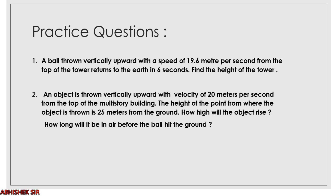Units to remember: velocity is always in m/s, acceleration or retardation in m/s², and distances always in meters. We will now discuss two practice questions based on free fall and equations of motion. First question: a ball is thrown vertically upward — take g as negative — with a speed of 19.6 m/s from the top of a tower, and returns to the earth in 6 seconds total. Find the height of the tower.